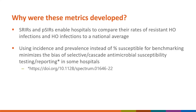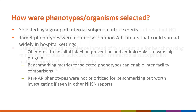SRIRs and PSIRs enable hospitals to compare their rates of resistant hospital onset infections, in the case of SRIRs, and hospital onset infections, in the case of PSIRs, to a national average. Using incidence and prevalence instead of percent susceptible for benchmarking minimizes the bias of selective or cascade antimicrobial susceptibility testing and reporting. SRIR phenotypes and PSIR pathogens were selected by a group of internal CDC subject matter experts because they are relatively common AR threats that could spread widely in the hospital setting, are of interest to hospital infection prevention and antimicrobial stewardship programs, and because benchmark metrics for these phenotypes could enable inter-facility comparisons. Rare AR phenotypes were not prioritized for benchmarking, but are still worth investigating in other NHSN reports.